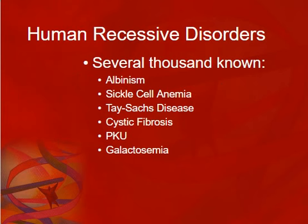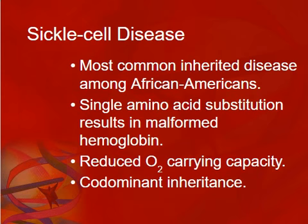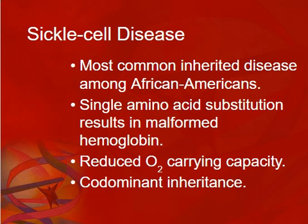Transitioning to recessive disorders — you're going to do research on your inquiries, so I won't spend a ton of time on these, but there are tons of recessive disorders. Sickle cell is one that merits discussion. It's really common in folks that have a family base in Africa. It's a single amino acid substitution that causes hemoglobin to not work properly — it changes the shape of hemoglobin so it can't carry oxygen as well. There's an NFL player who has trouble every time he goes to Denver because of the higher elevation. He carries the sickle cell trait, and whenever he plays there he goes through special treatments to make sure he doesn't pass out from lack of oxygen.